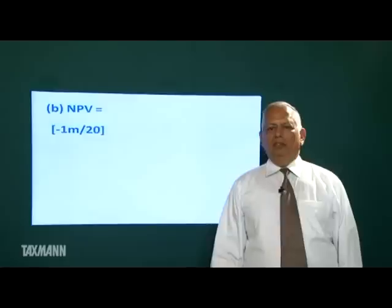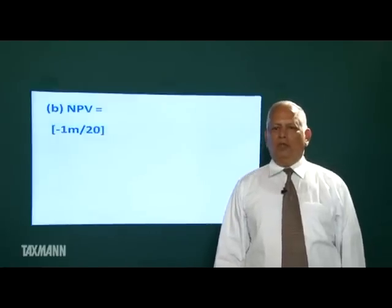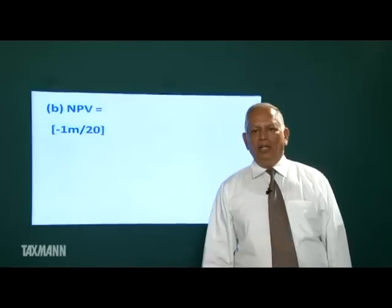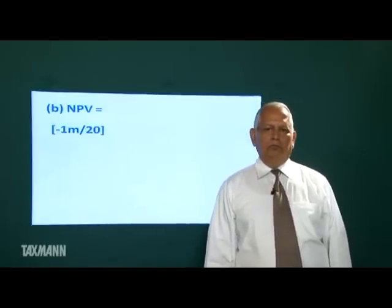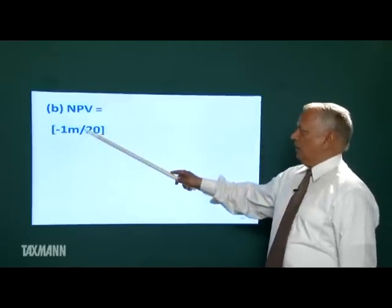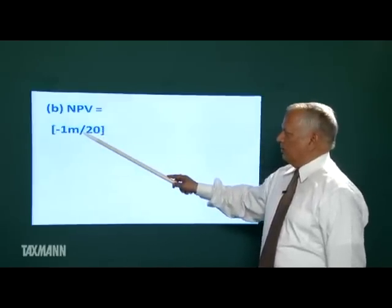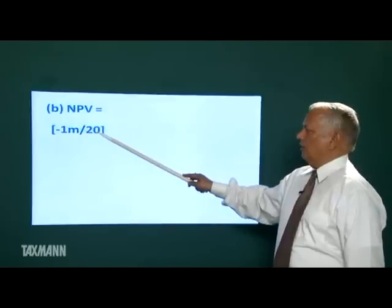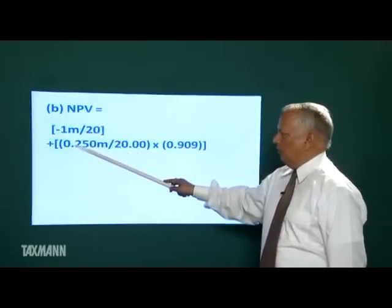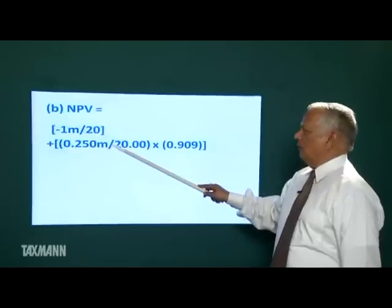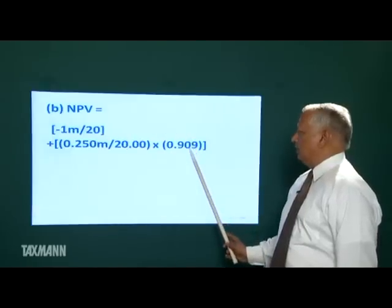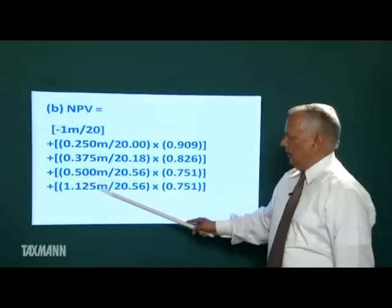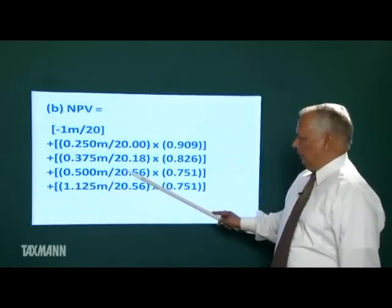In Part B, the annual dividend is 50% of cash flow and the balance cash is shared by the two venturers at the beginning of the fourth year. The Indian firm invests 1 million Tanzanian shillings — cash outflow in rupees is 1 million divided by 20. Year 1 dividend is 0.250 million shillings converted at 20 and discounted at 10%; similarly for years 2 and 3. In the beginning of year 4, the remaining cash of 2.25 million shillings is distributed; the Indian firm receives 1.125 million shillings. The NPV under Part B is rupees 36,068.